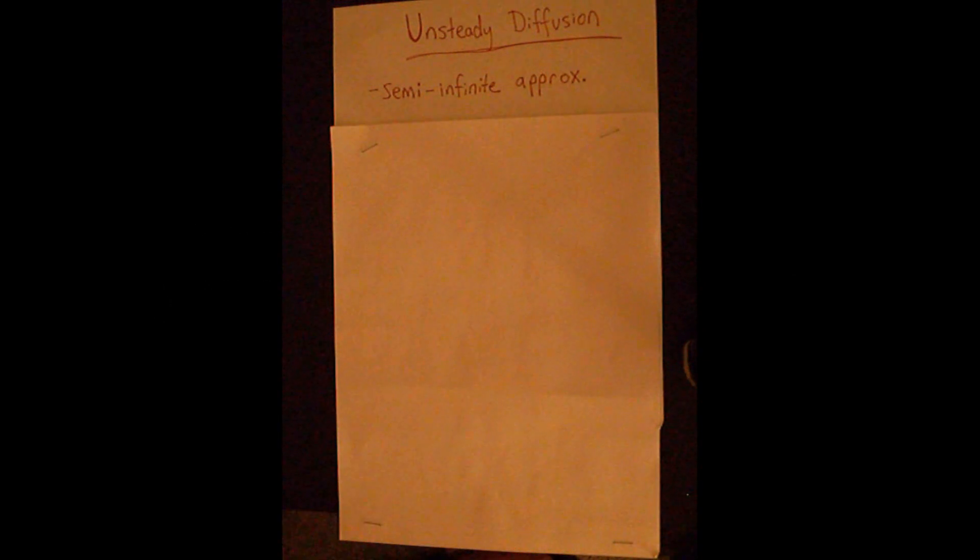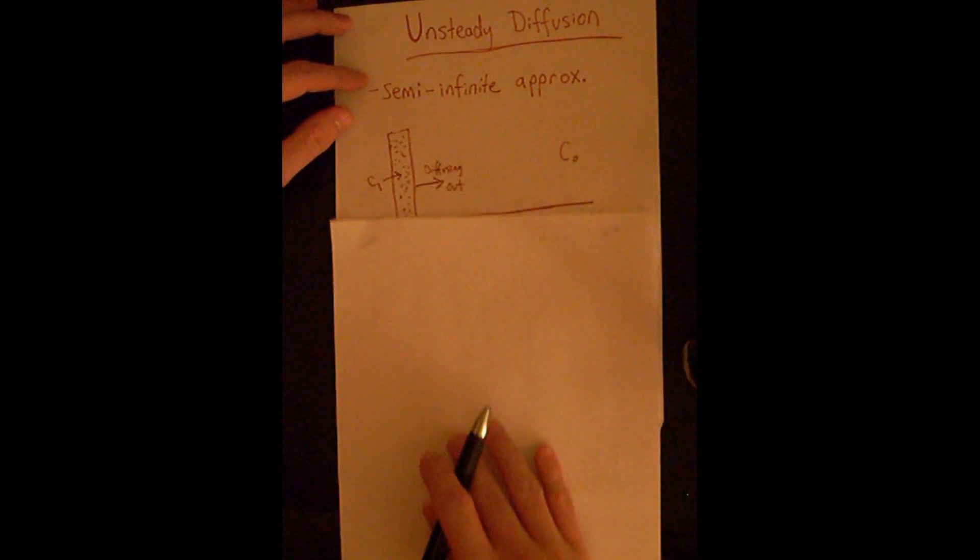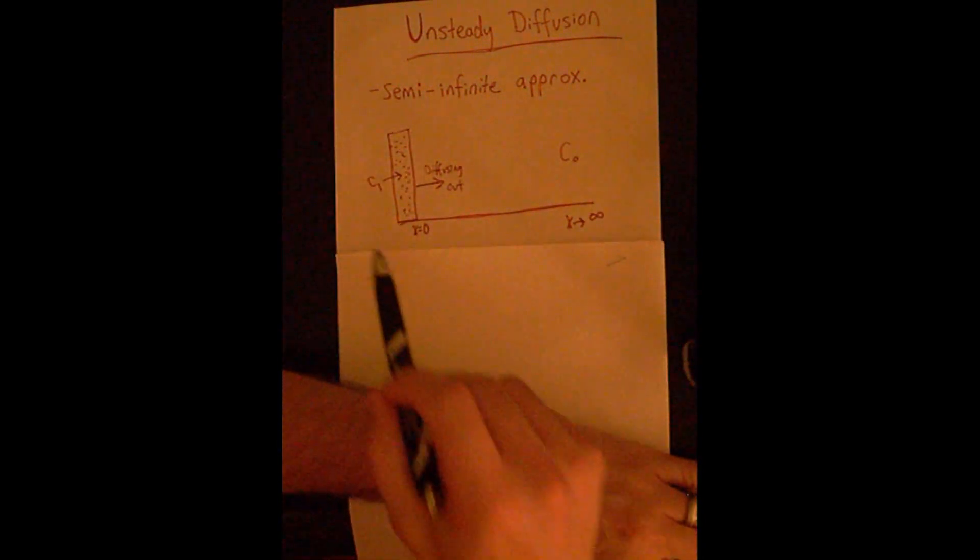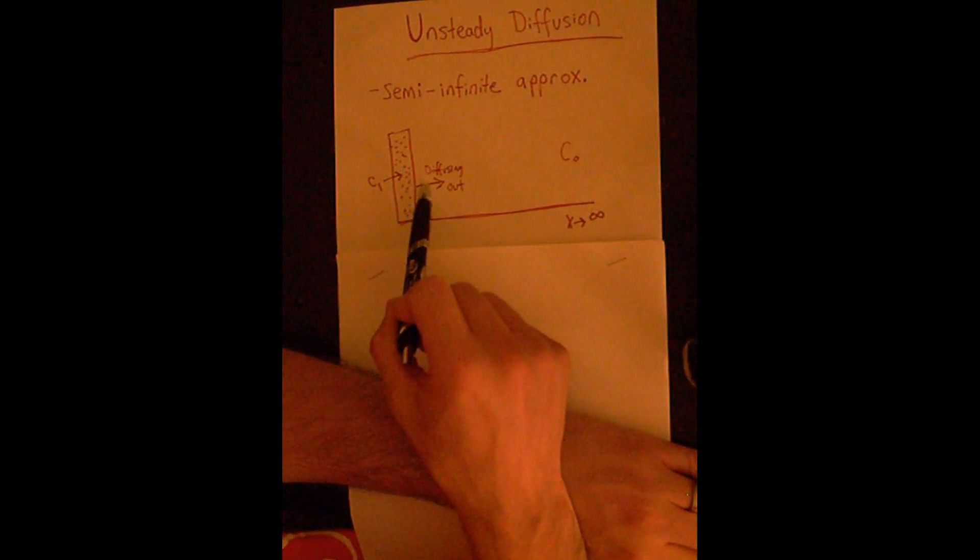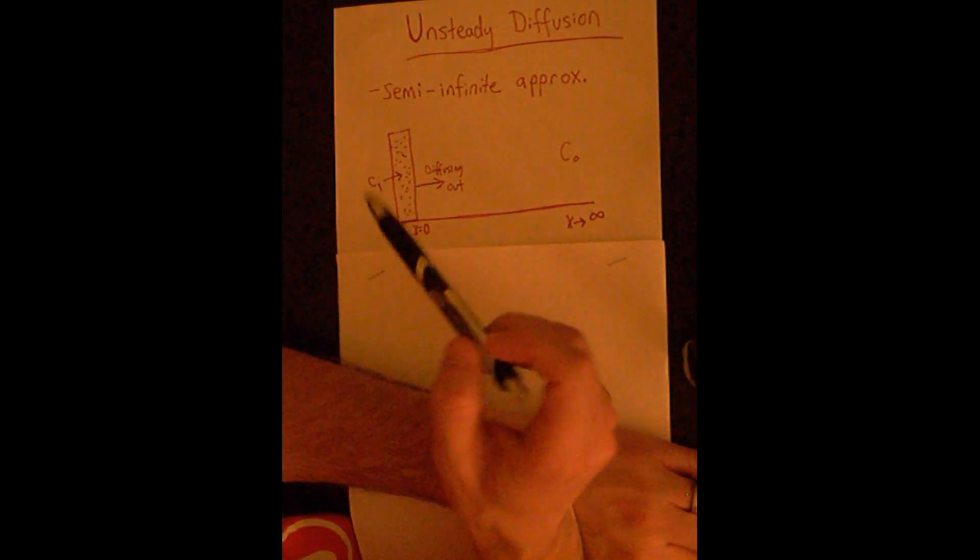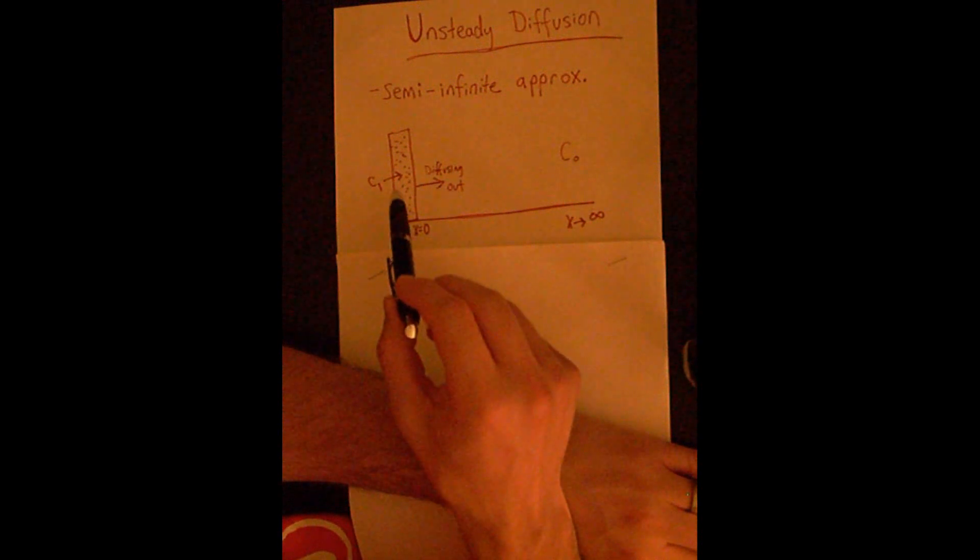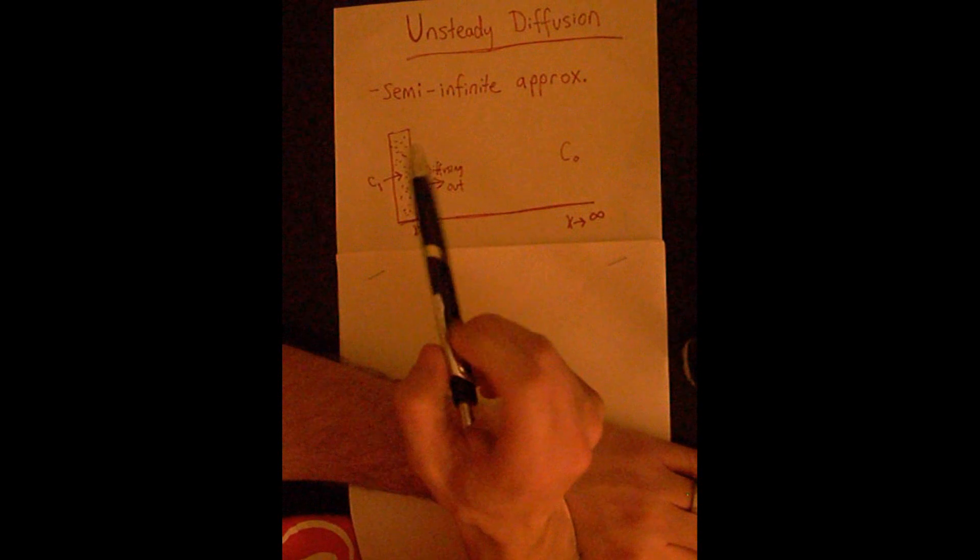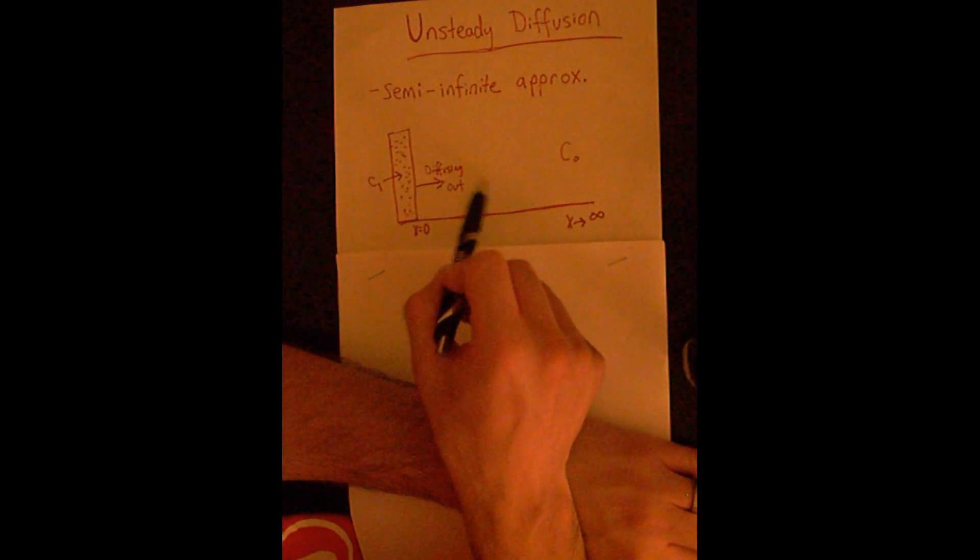Now I'm going to start talking about the semi-infinite approximation for certain cases of unsteady diffusion. Here we have a solute diffusing out into this space. The solute has, at time equals zero, a concentration equal to C1 at this point. At this spot right here, the concentration will always equal C1, and the solute will diffuse out into this space.